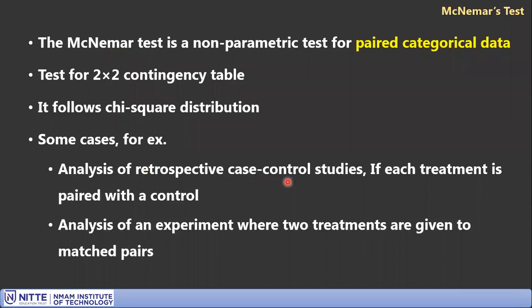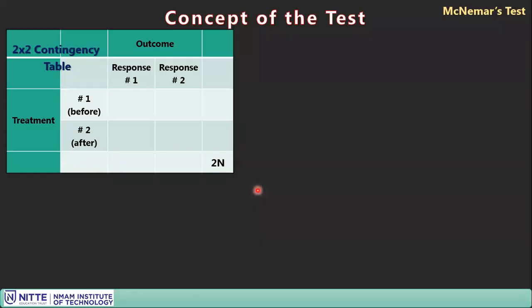As a case example, consider analyzing a retrospective case-control study where each treatment is paired with a control — that is, cases and controls are paired. Another example is an experiment where two treatments are given to matched pairs, so you analyze the matched pair as one group for each treatment.